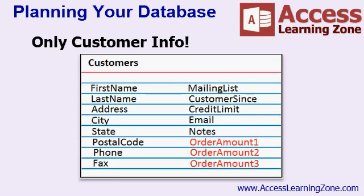You'll notice that I don't have any information in the customer table about the customer's orders. I've seen some people build databases where they put order information in the customer table — order amount one, order amount two, order amount three, and so on. Where does it end? How many order amount fields do you need in there? Right now, this customer is limited to only three orders, and that's bad database design. As a general rule of thumb, if the customer has more than one of some type of thing, put it in a different table.